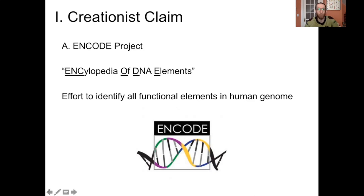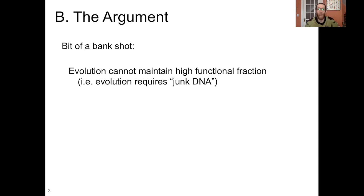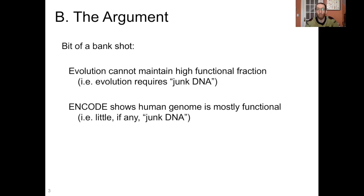The creationist argument around ENCODE and junk DNA is a bit of a bank shot. It goes like this: evolution cannot maintain a high functional fraction — meaning processes like natural selection cannot maintain a large genome that is mostly functional. In other words, evolution requires junk DNA. The ENCODE Project shows that the human genome is mostly functional, with a high functional fraction and little if any junk DNA. Therefore, evolution is wrong. That's how this argument is framed for creationists.